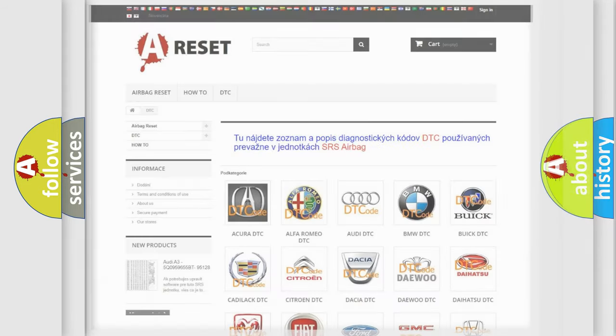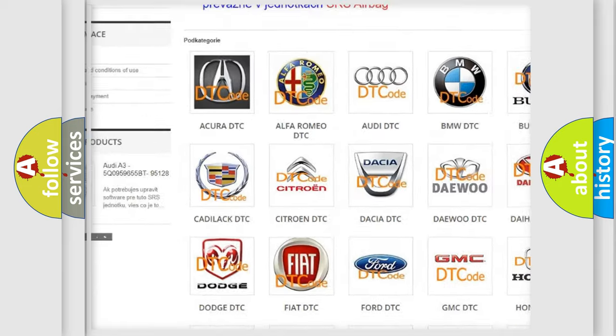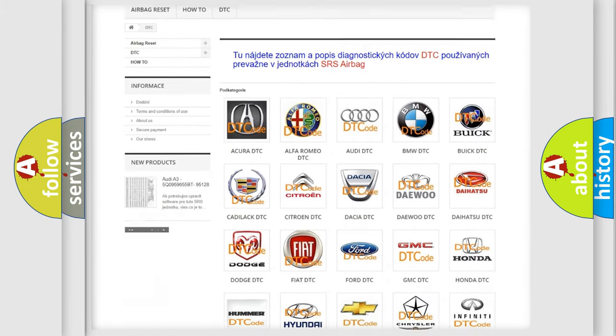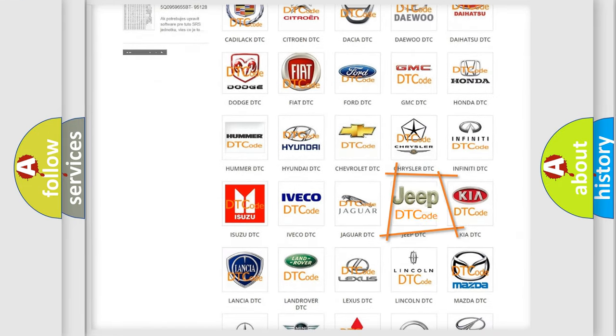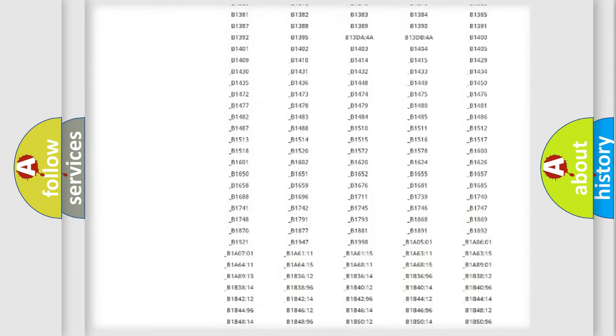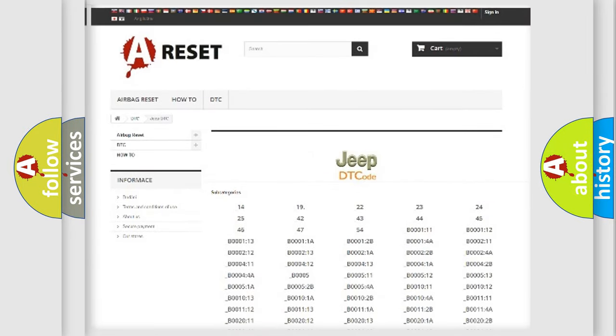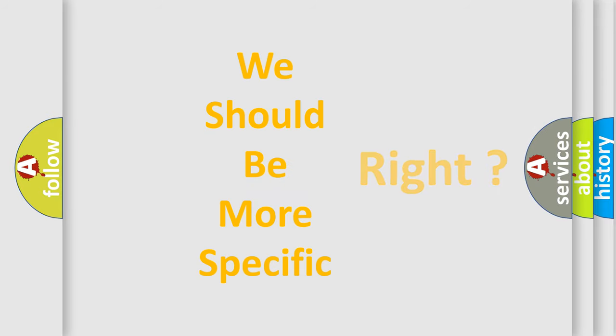Our website airbagreset.sk produces useful videos for you. You do not have to go through the OBD-II protocol anymore to know how to troubleshoot any car breakdown. You will find all the diagnostic codes that can be diagnosed in Jeep vehicles, and also many other useful things. The following demonstration will help you look into the world of software for car control units.